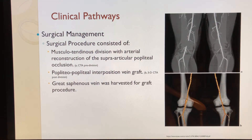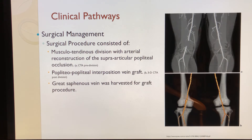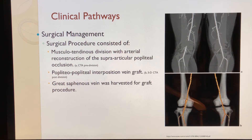These images demonstrate the surgical management and procedural processes. The upper image is a CT pre-divisional image showing the musculotendinous division with arterial reconstruction of the supraarticular popliteal occlusion. The lower image is a 3D CT post-divisional image showing the pop-popliteal interposition vein graft, harvested from the opposite leg's great saphenous vein.